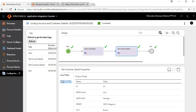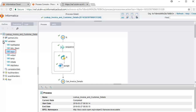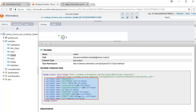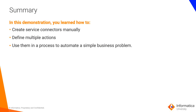If you wish to do further detailed debugging, go to the Advanced View. Click Variables and look at the input fields — here you can see the input values to the process, which is Invoice ID 12. Next, review the output fields and output values. This concludes the video demonstration on creating and executing an account invoice processing process. In this demonstration, we learned to create service connectors manually, define multiple actions, and use them in a process to automate a simple business problem. You can follow these steps to solve complex business problems using various cloud application integration assets suited for your needs.